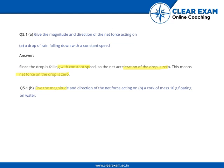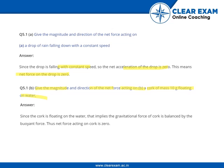Give the magnitude and direction of net force acting on a cork of mass 10 grams floating on water. Since the cork is floating on water, the gravitational force of the cork is balanced by the buoyant force. Thus the net force acting on the cork is zero.